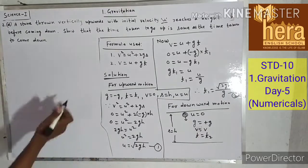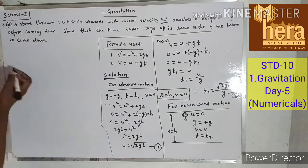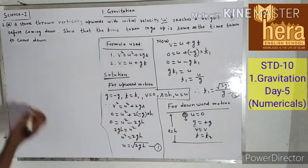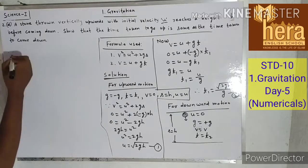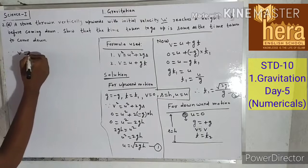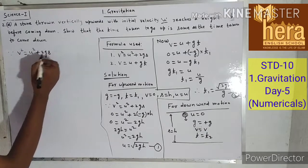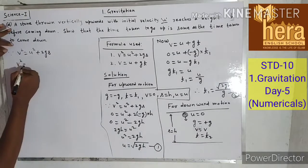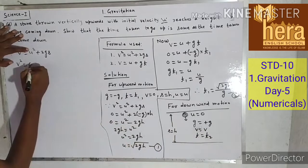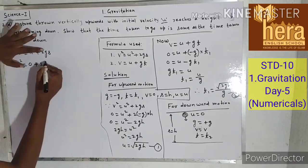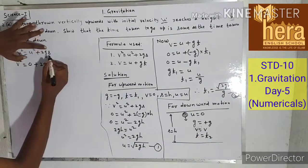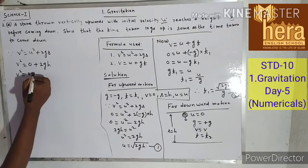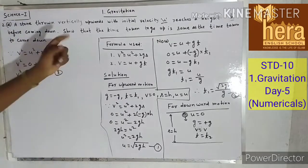For downward motion, using v² = u² + 2gs: v² = 0 + 2(+g)(h) = 2gh, so v² = 2gh. Therefore v = √(2gh). This is equation number 3.